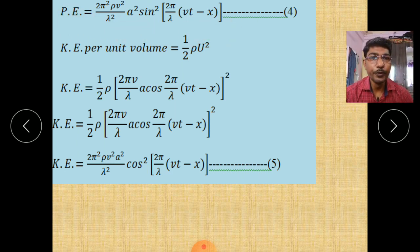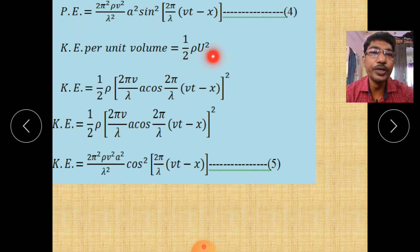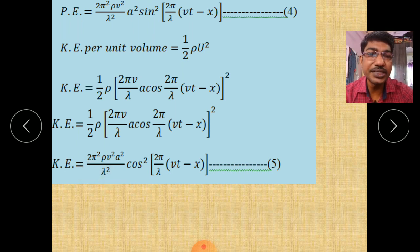Now, kinetic energy per unit volume: kinetic energy equals half times mass times velocity squared. But here, in place of mass, we consider density ρ, which is mass per unit volume. Therefore, kinetic energy per unit volume = ½ρu². Here u is the velocity of the particle. Therefore, kinetic energy = (2π²ρv²a²/λ²) cos²(2π/λ)(vt − x).